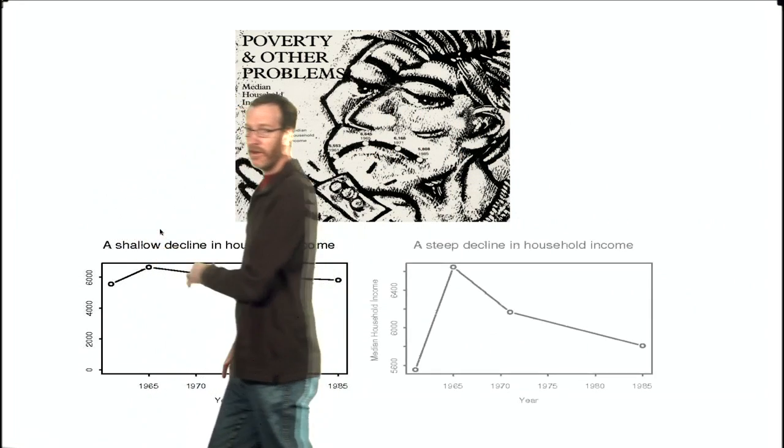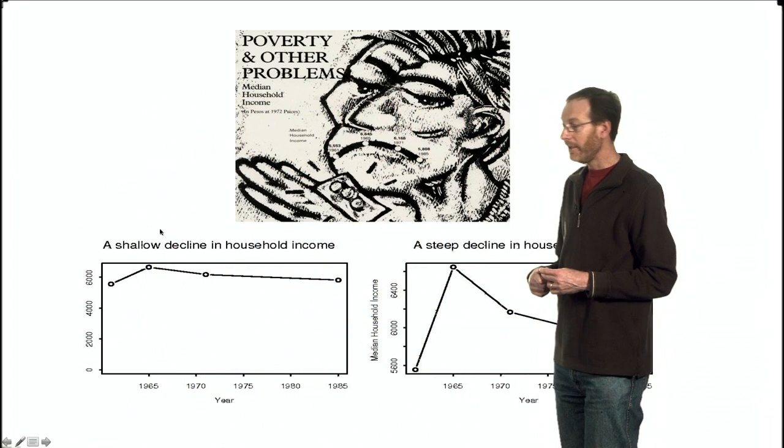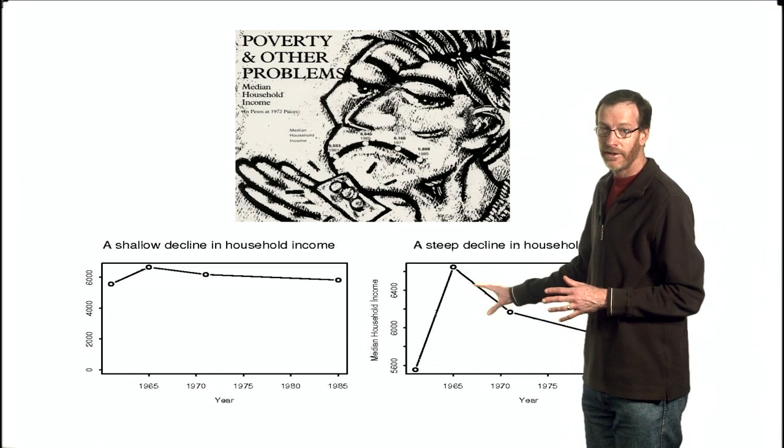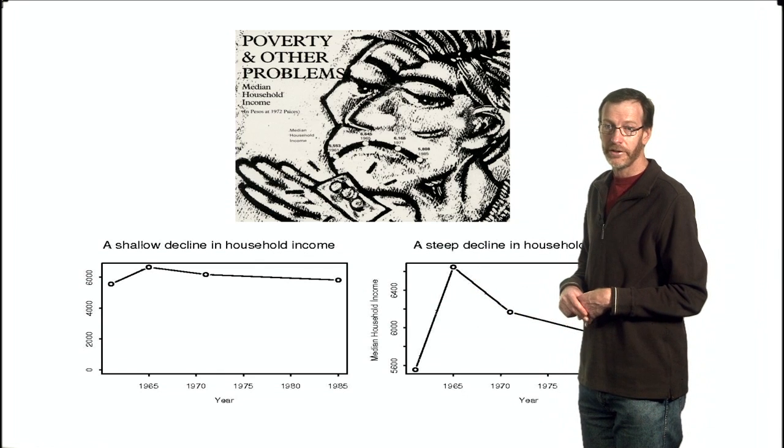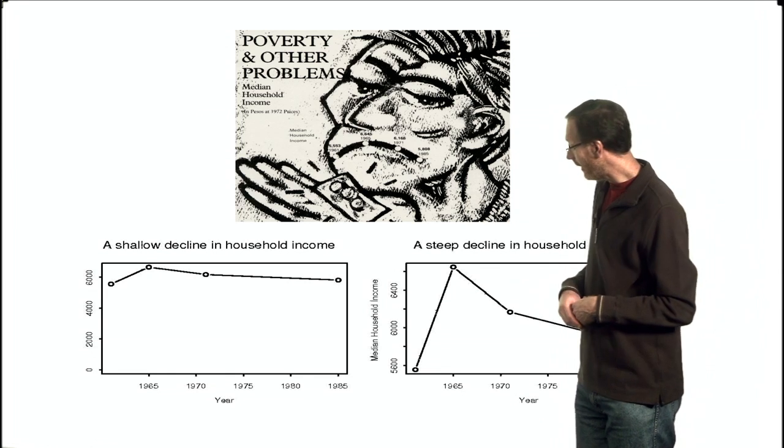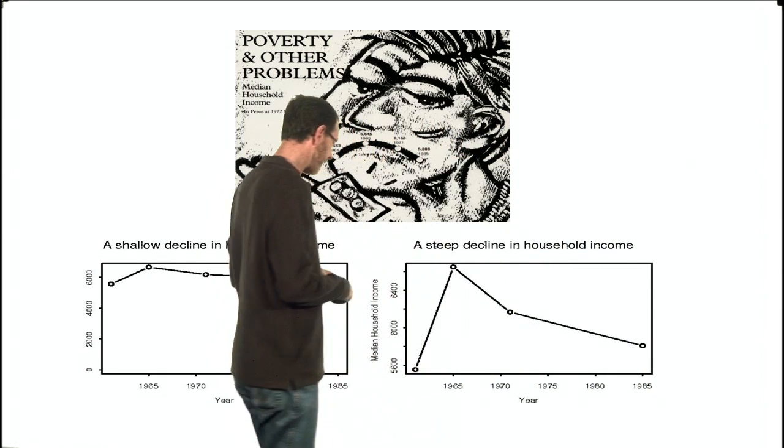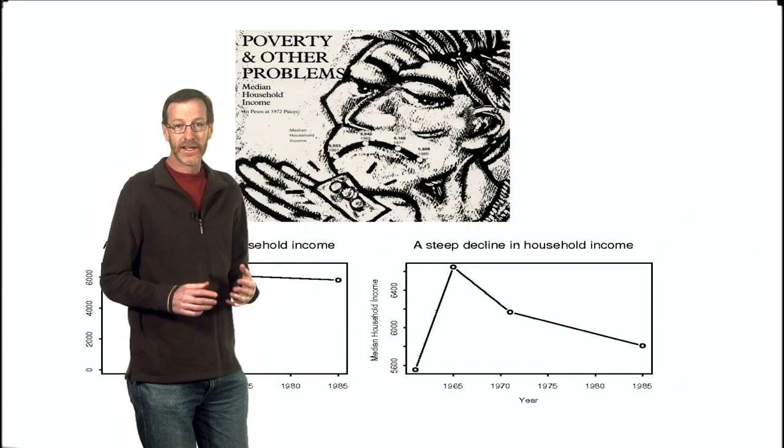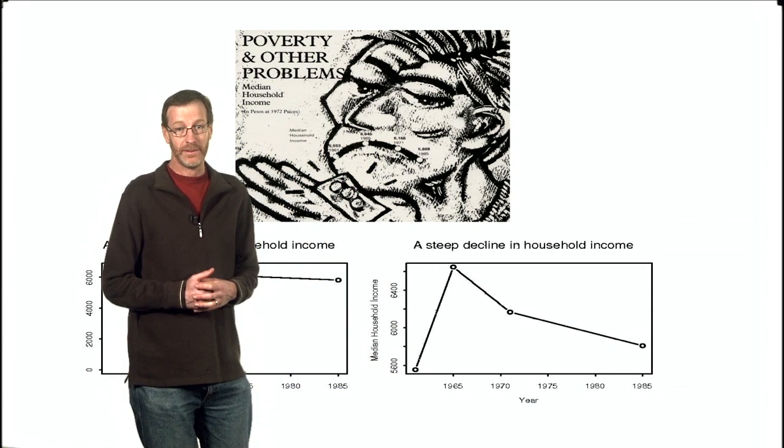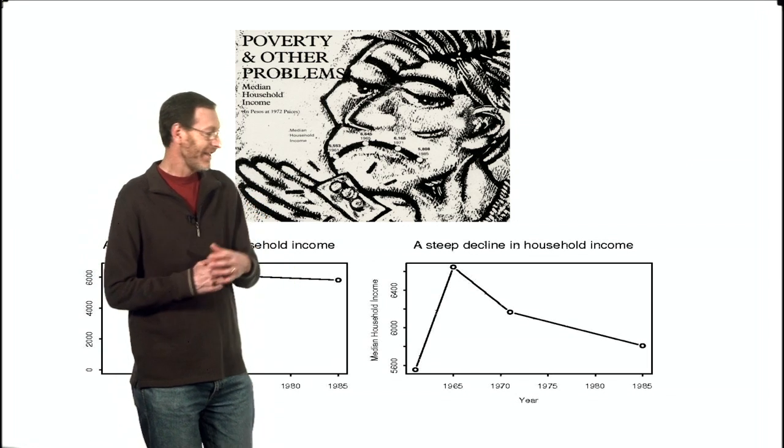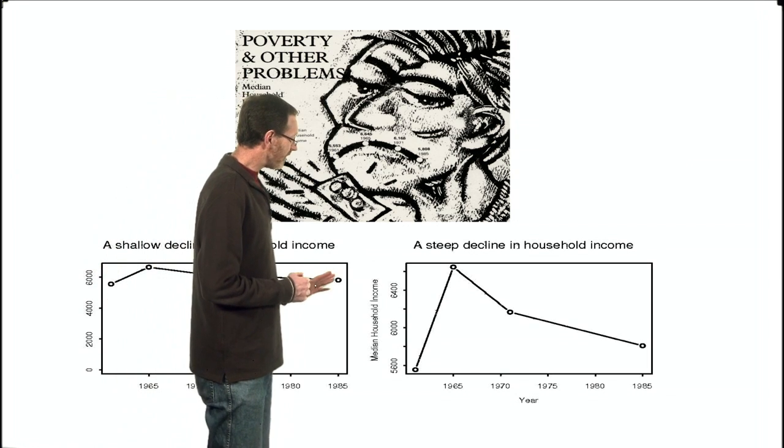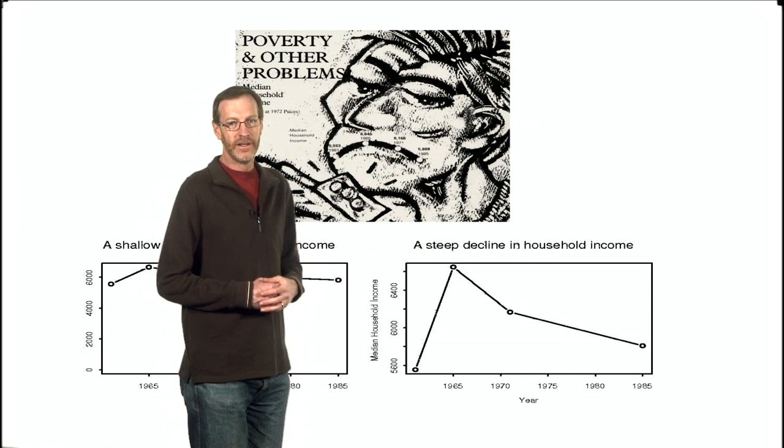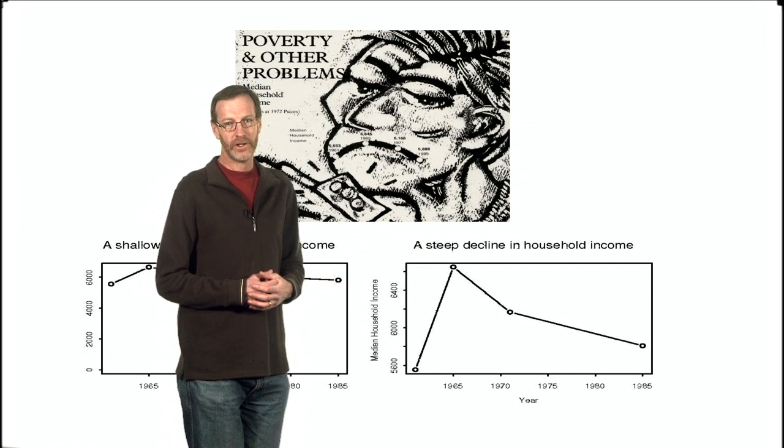Of course, in the hands of another newspaper editor, something different could happen. Here, I'm rendering exactly the same data again, but this time, I've not made the choice to force zero to be on the plot. Alright, it's a valid choice, I guess. And so, here, the lowest number on this plot is 5600. Suddenly, all the lines on the plot look steep, because they go from the very bottom to the very top. And so, it looks like household incomes rose sharply, and then are on steep decline. And this is a very different message to be communicated to the public.